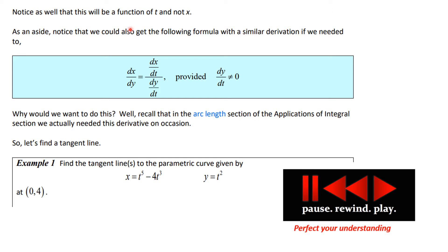Note that dy/dx is a function of t, not x — watch the examples and you will see this. As an aside, with a similar derivation we can also obtain dx/dy = (dx/dt) / (dy/dt), provided that dy/dt ≠ 0. This form is needed in certain contexts such as arc length.